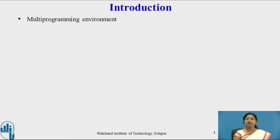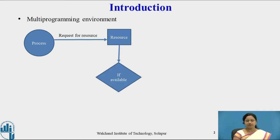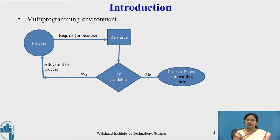What is deadlock? In a multi-programming environment, multiple processes execute simultaneously and resources are allocated to them. Resources can be anything — hardware or software — such as memory, CPU, registers, or I/O devices. Whenever a process requires a resource, it must request it. If that resource is available, it is allocated to the process by the operating system.